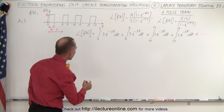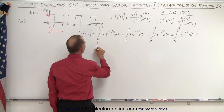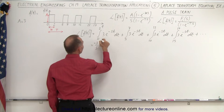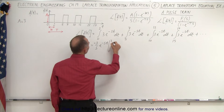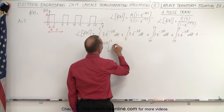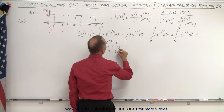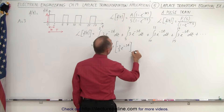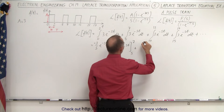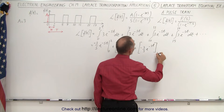What do we get for each one of these? This becomes: minus 3 over s times e to the minus st, evaluated from 0 to 2. Then plus minus 3 over s times e to the minus st evaluated from 5 to 7. Then plus minus 3 over s times e to the minus st evaluated from 10 to 12.